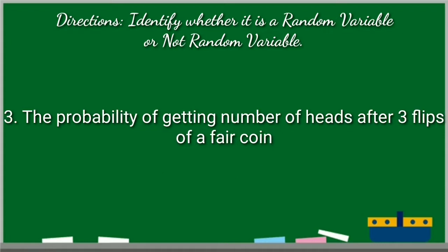Number three, the probability of getting number of heads after three flips of a fair coin. What is your answer? The answer is random variable. Because in this case, it measure or count. That is why it is random variable.